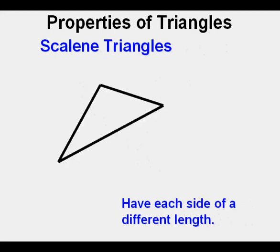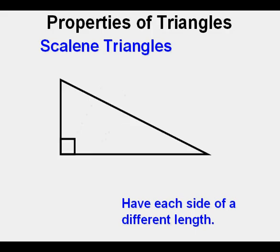Scalene triangles have all sides of a different length like this one. This scalene triangle, since its largest angle looks to be an obtuse angle, is also an obtuse triangle.